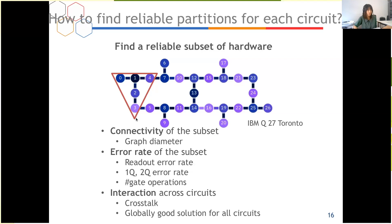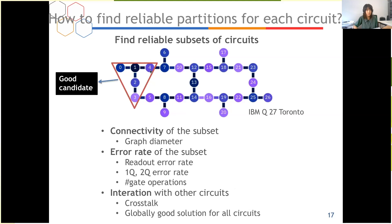Third, you need to take care of interactions across circuits — mitigate crosstalk and find a globally good solution for all circuits. Sometimes you might want to sacrifice the reliability of one partition to find the global optimal solution for all partitions. A good candidate for a reliable partition is densely connected and has low errors.